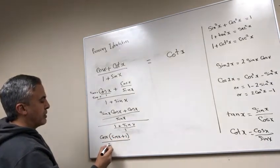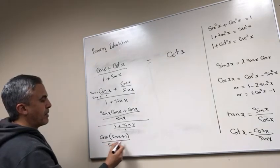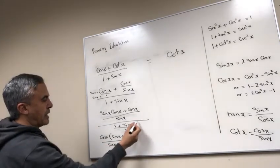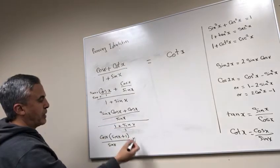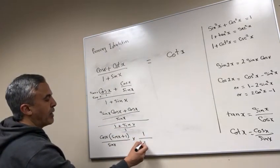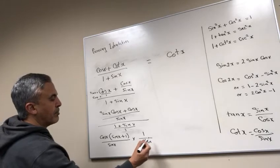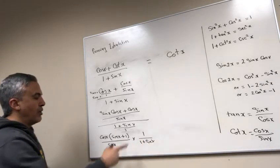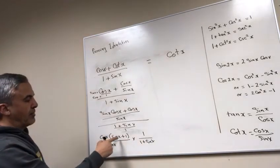Times, I'm gonna change this division to multiplication and flip this for 1 over 1 plus sine X. Now if you look at this and this, both of them have sine X plus 1 or 1 plus sine X, the same thing.